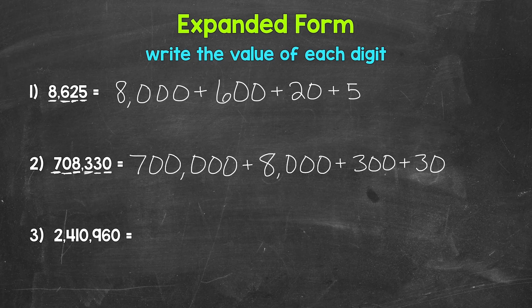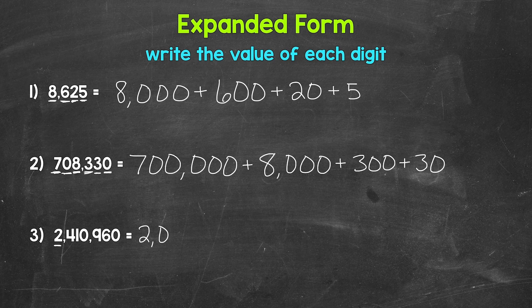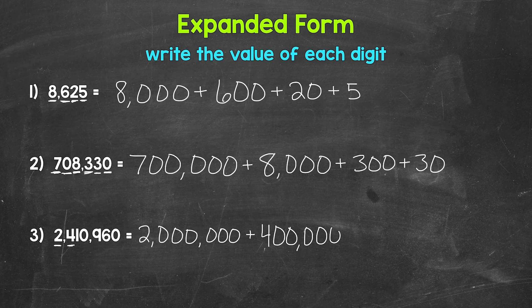Lastly, let's take a look at number 3 where we have 2,410,960. Let's start with the furthest digit to the left — this 2. Now, what is the value of this 2? Well, it's in the millions place, so it has a value of 2 million. And then we can move to the next digit, this 4 right here in the hundred thousands place. So this 4 has a value of 400,000. Next, we have a 1 in the ten thousands place, so this 1 has a value of 10,000.